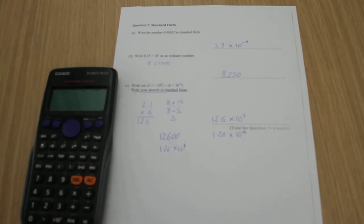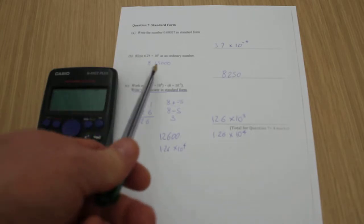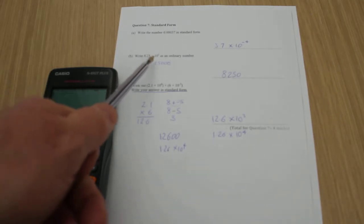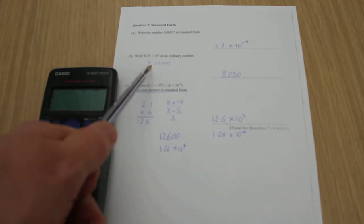Writing 8.25 times 10 to the power of 3 as an ordinary number. I write down 8.25. I've given myself some extra zeros to play with at the end. So I just need to calculate how many places to move my decimal point.